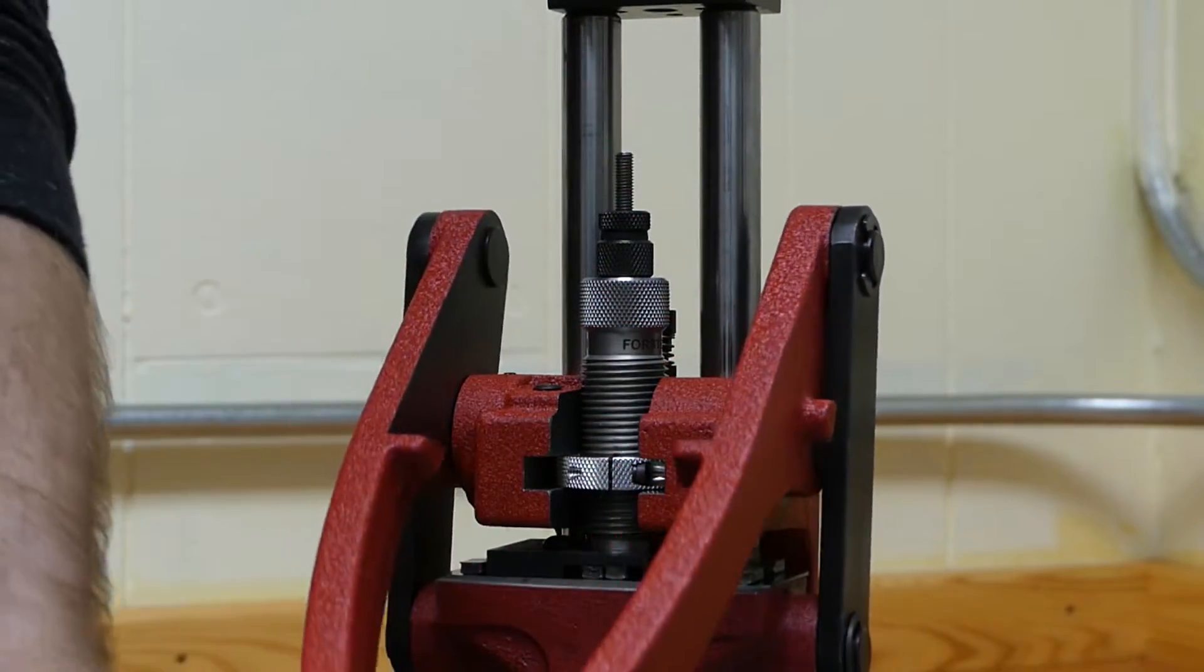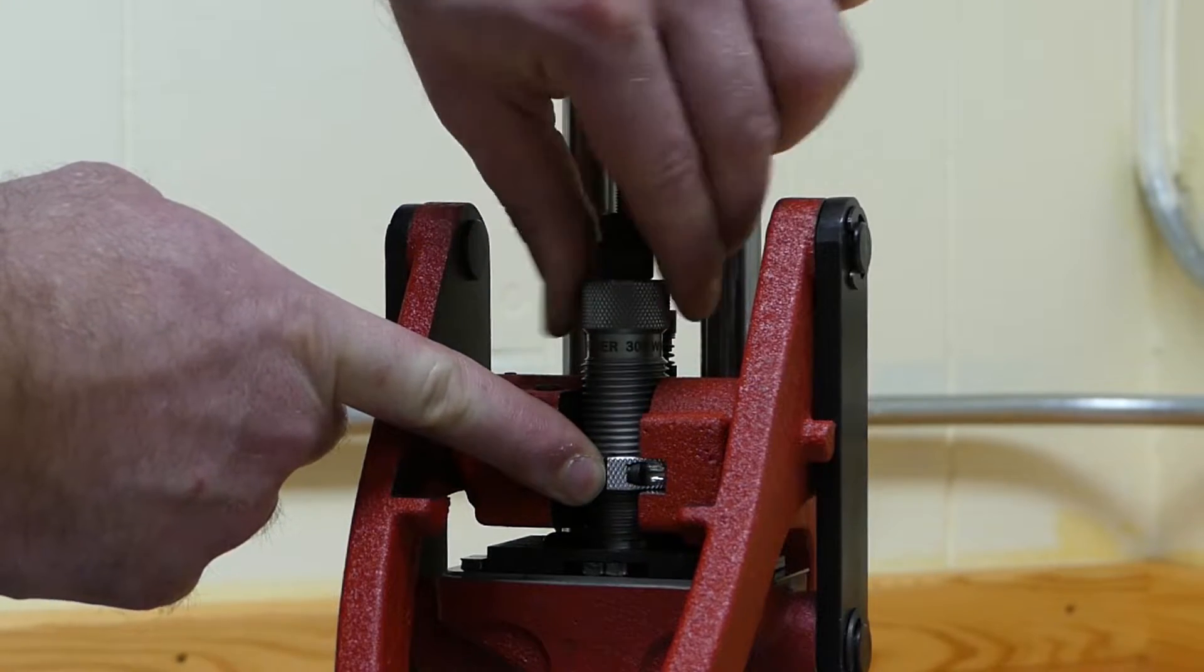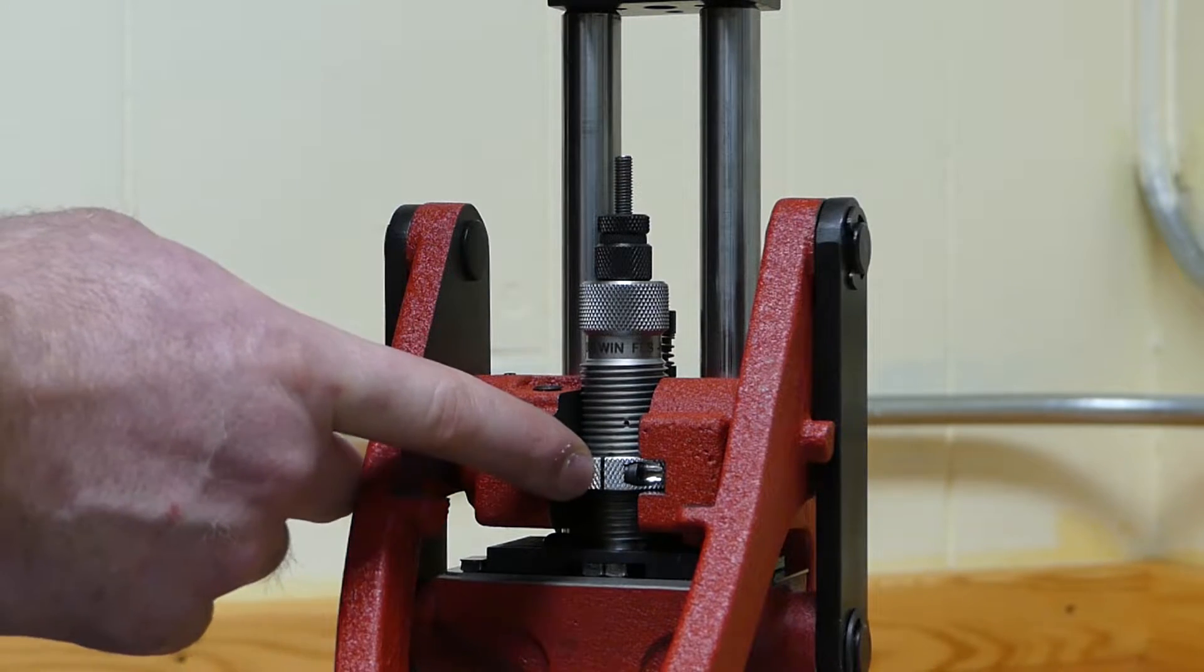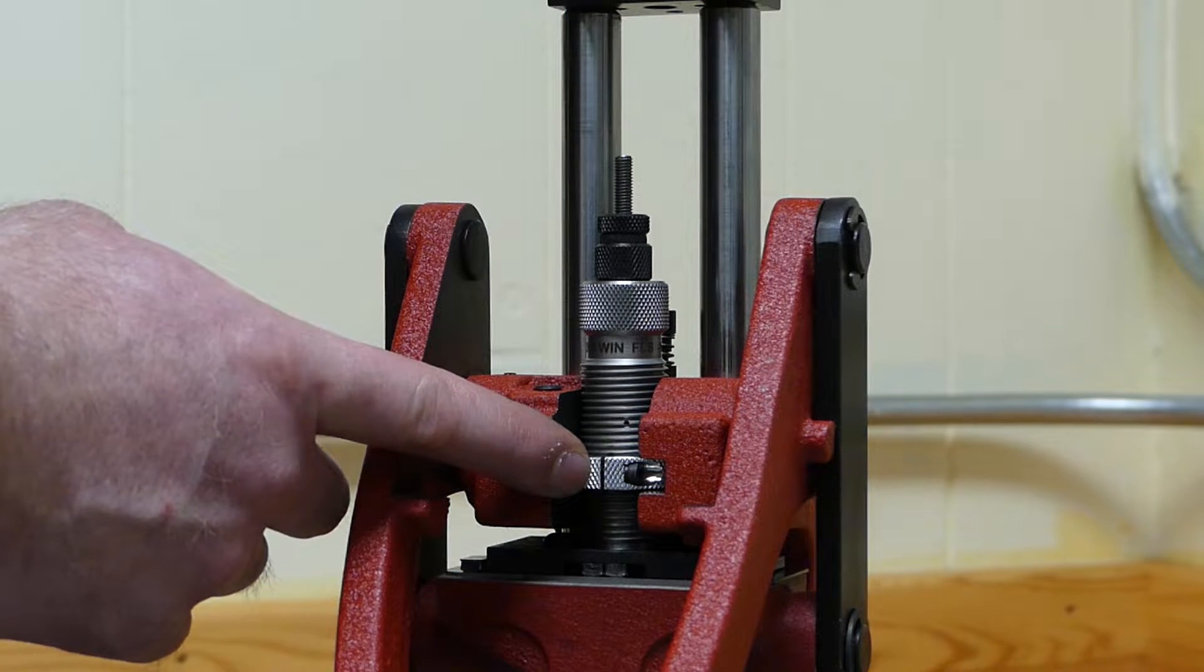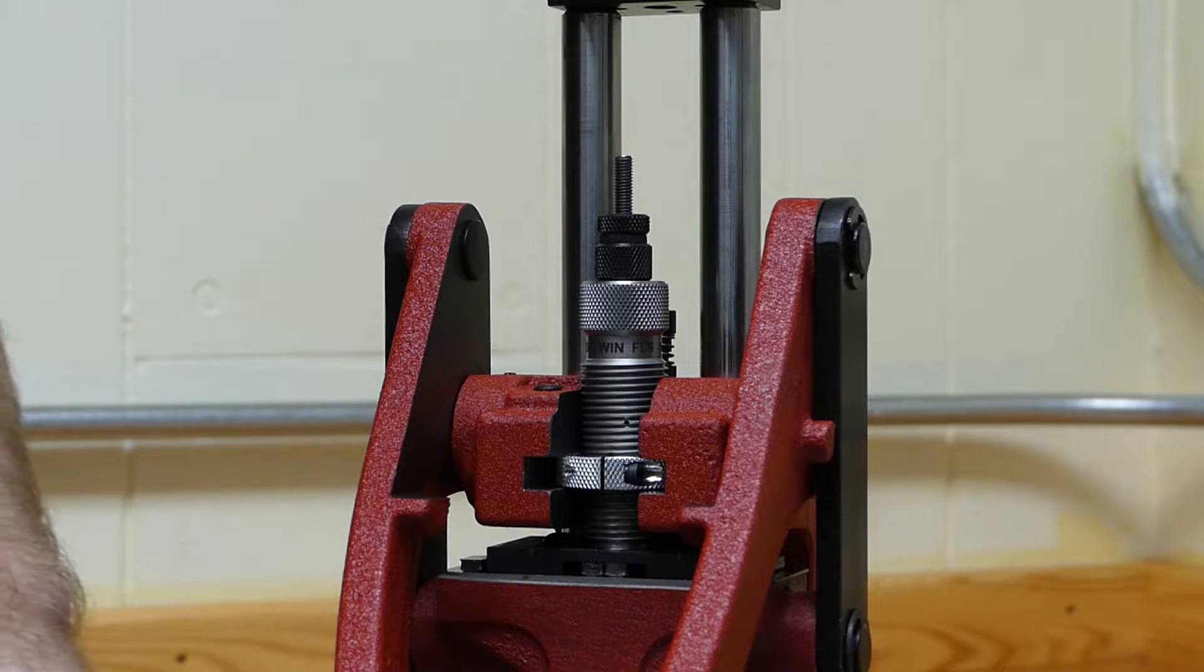One thing you'll need to do is run the die down until it contacts the shell holder in the press. Now I've pre-tensioned the lock ring on the die so that it doesn't move extremely freely, that it has some resistance, and that'll become important as we get going later on.